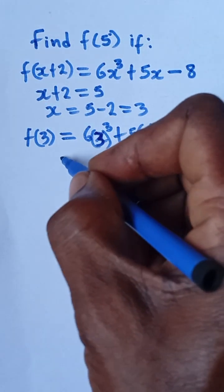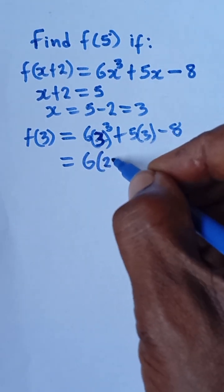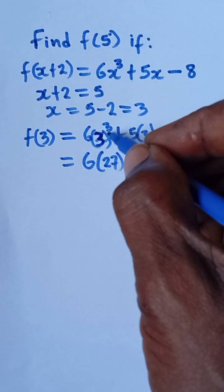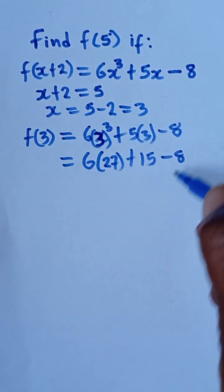And then that will give me 6 times 27. 3 raised to the power 3 is 27, plus 5 times 3 is 15, minus 8.